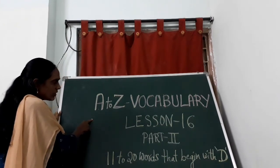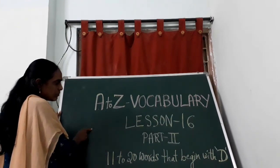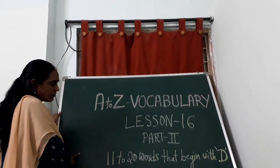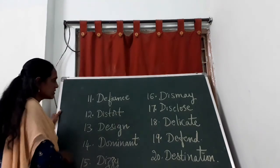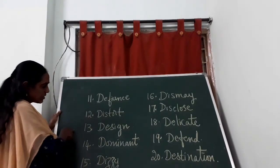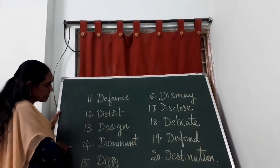A to Z Vocabulary, Lesson 16, Part 2: 11 to 20 words that begin with D. In this part, I want to explain about these 10 words.